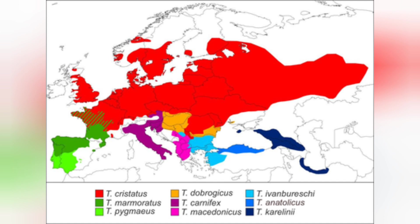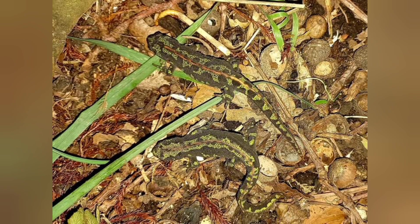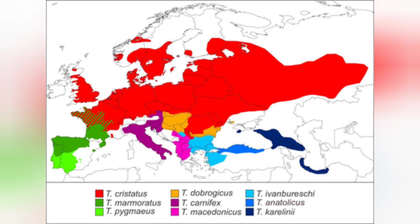Triturus marmoratus is the marbled newt, also known as the northern marbled newt. Following on from northern France where the marbled newt is sympatric with the great crested newt, moving down into the south of France where Triturus cristatus is no longer found, we have Triturus marmoratus from the south of France down into northern Spain and northern Portugal.